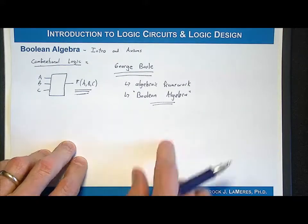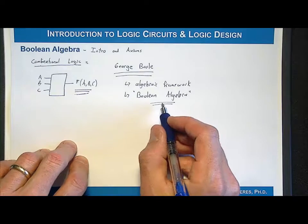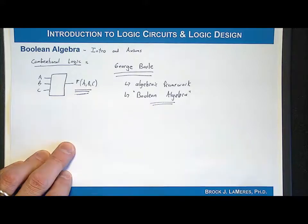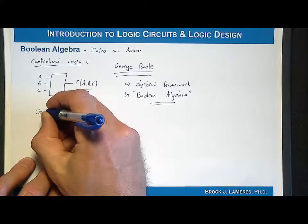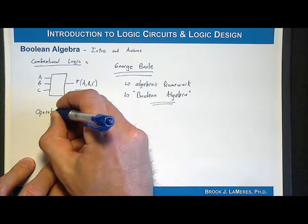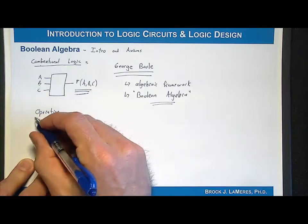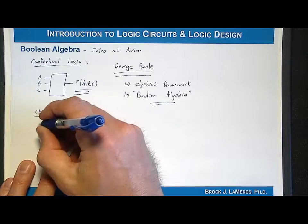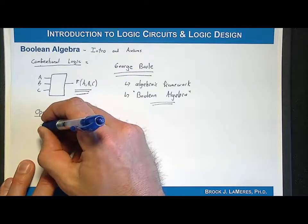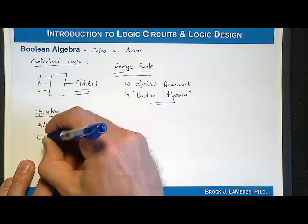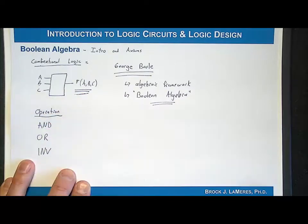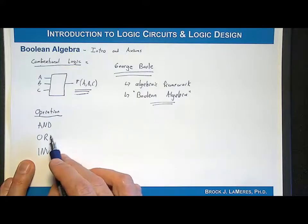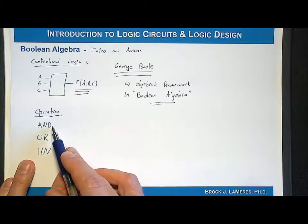To start talking about the algebraic framework, let's look at the operators — the operations that are allowed in a Boolean algebra framework. We're only going to allow three operations: the AND operation, the OR operation, and the NOT operation. We're not going to use exclusive OR gates or NAND gates. All we're going to do is define this mathematical framework for three operations: AND, OR, and the inverter.